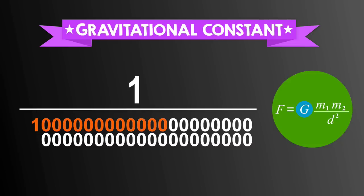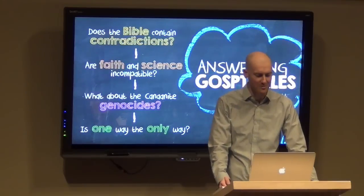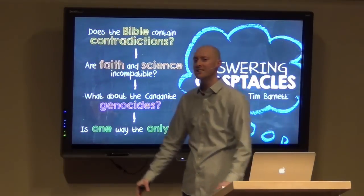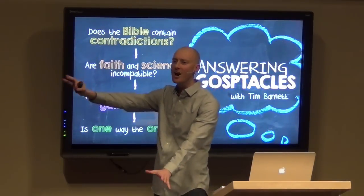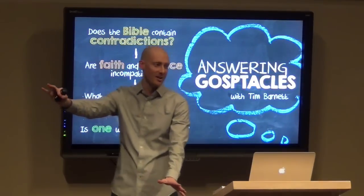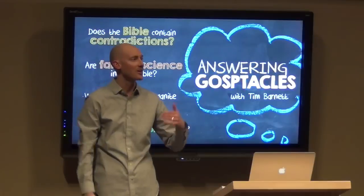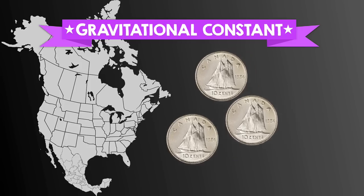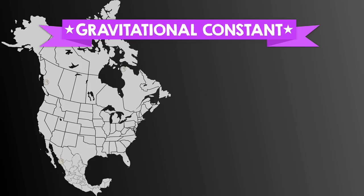And our number for the gravitational constant has all those zeros. Let me try and put this in perspective for you. Imagine we take the entire continent of North America and we cover it in dimes.